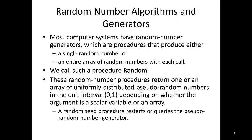These random number procedures return one or an array of uniformly distributed pseudo-random numbers in the unit interval 01, depending on whether the argument is a scalar variable or an array. A random seed procedure restarts or queries the pseudo-random number generator. The random number generator can produce hundreds or thousands of pseudo-random numbers before repeating itself.